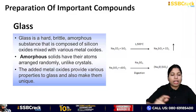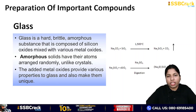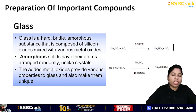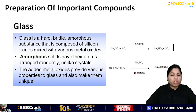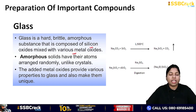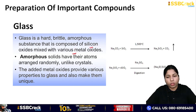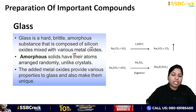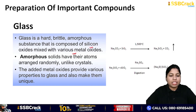Moving on to glass. Glass is actually a super-cooled liquid — it is not completely a liquid, it is a super-cooled liquid. It is hard, brittle, has no proper shape, and is amorphous. It is composed of silicon oxides mixed with various metal oxides. Sand, which is silicon oxide, is mixed with different metal oxides and then heated with sodium carbonate to form glass.